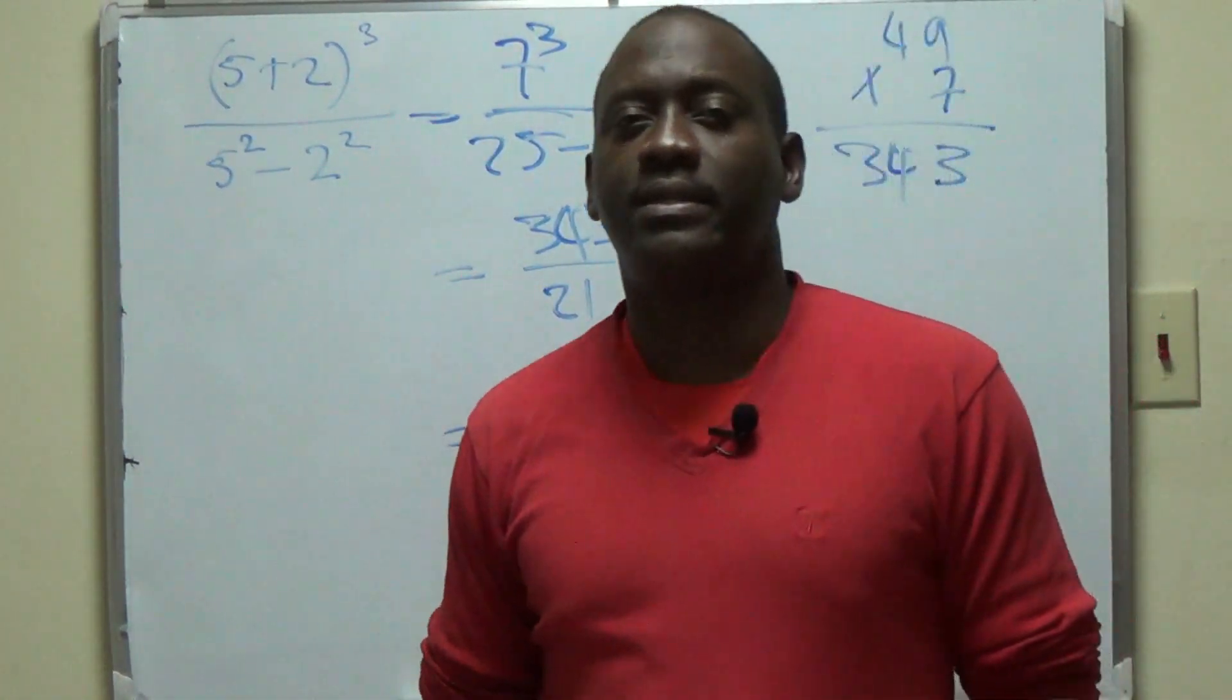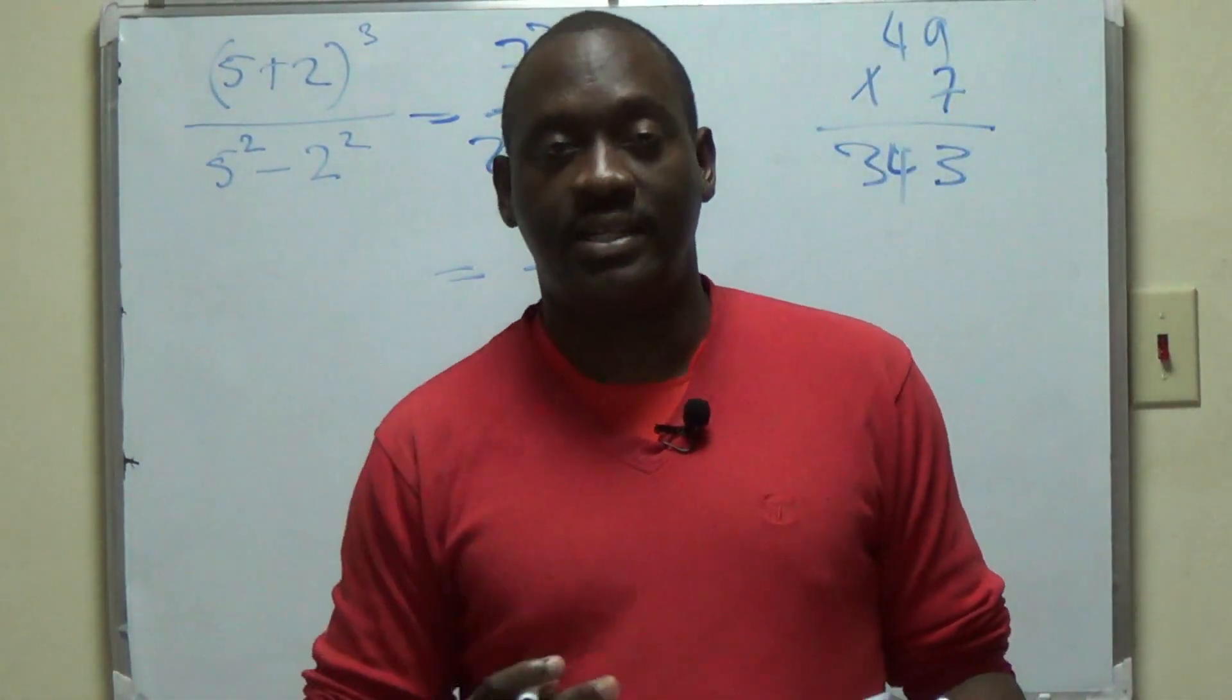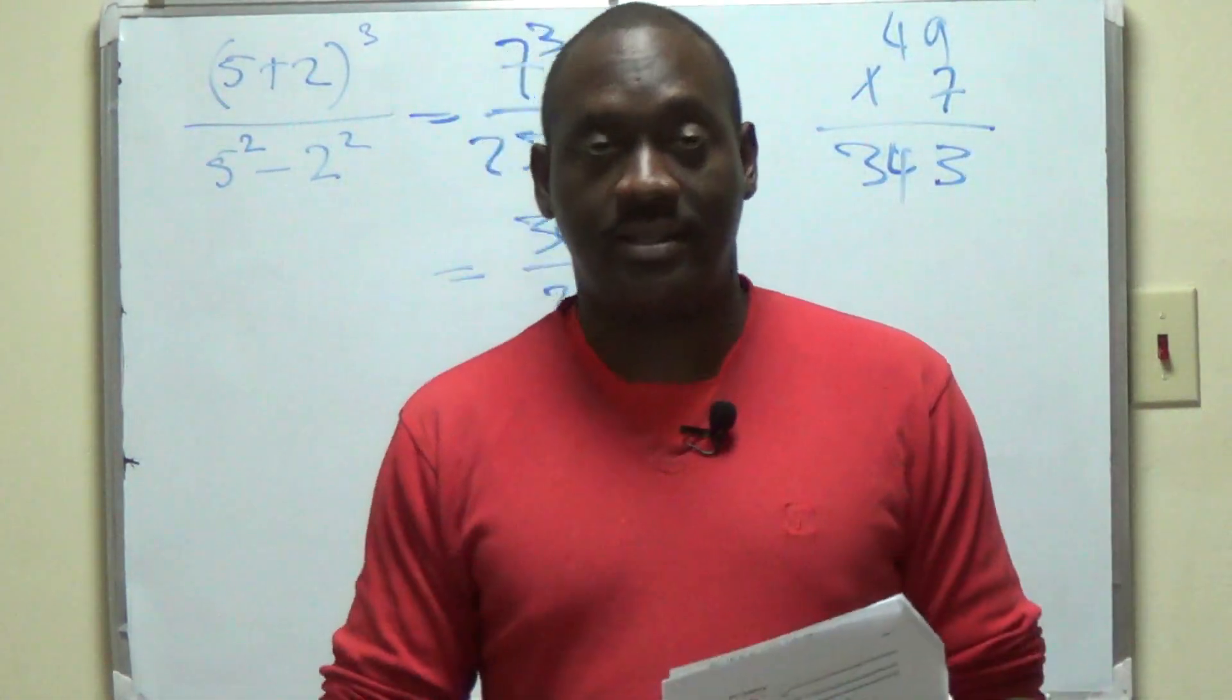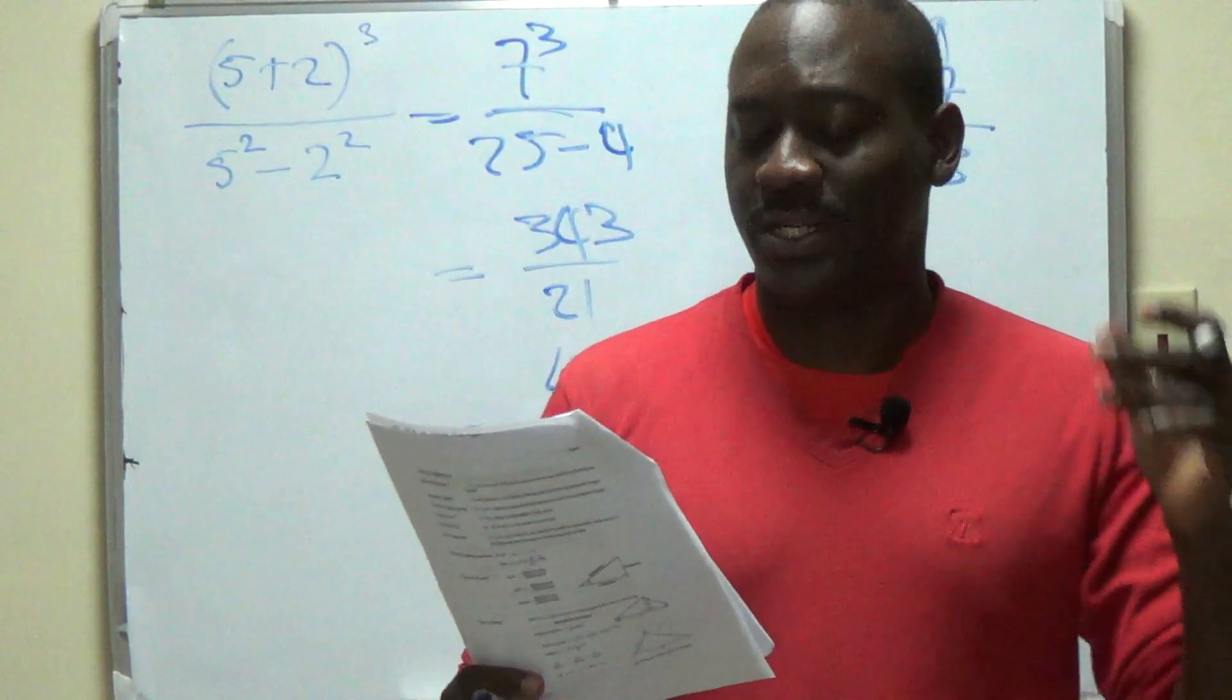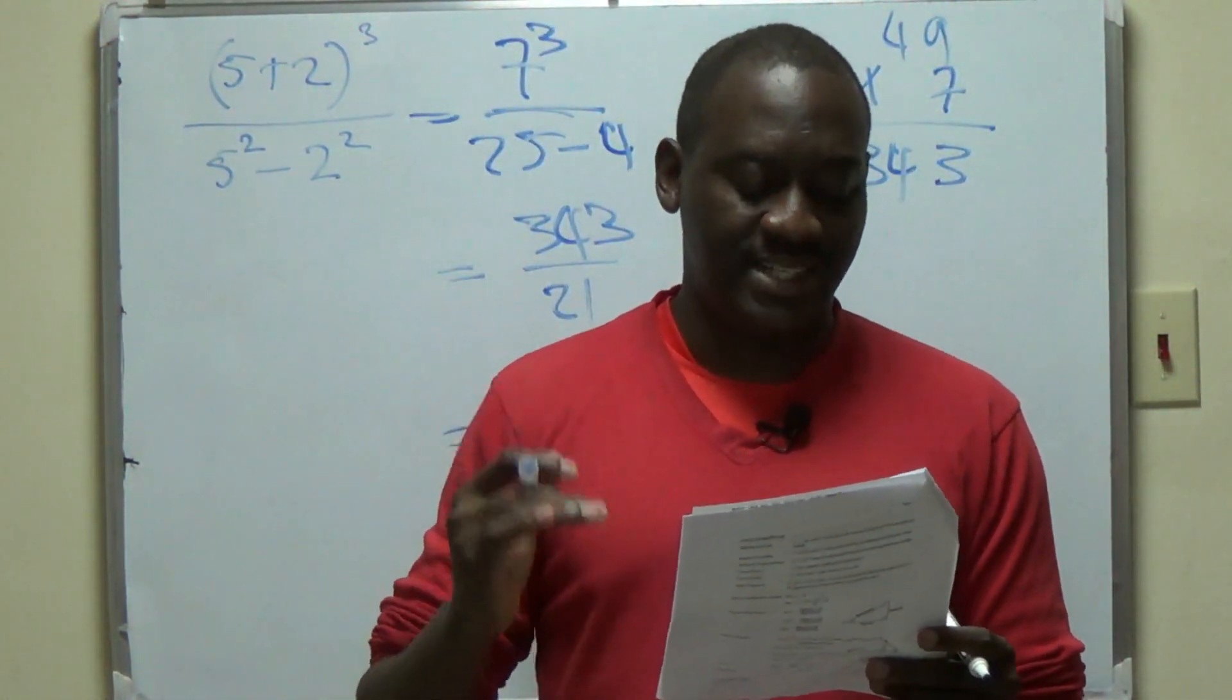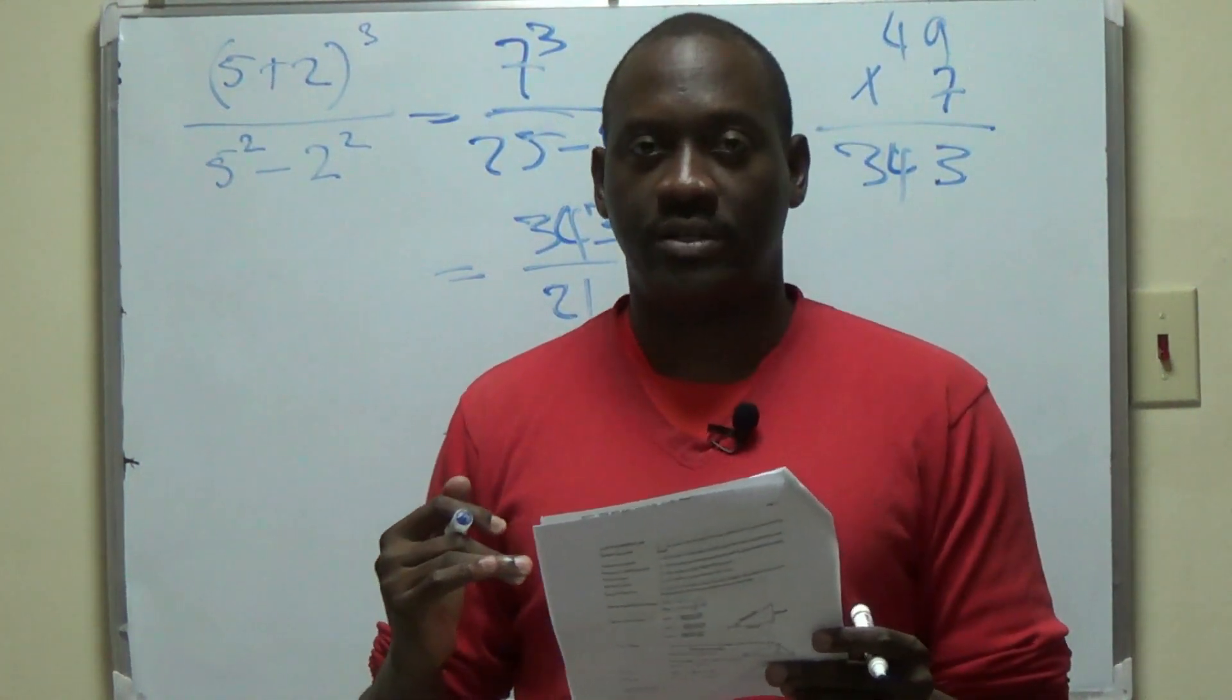In the paper 2, you'd have the calculator. In the paper 1, you wouldn't have the calculator. The objective, of course, is to get the thing done and get it done properly. So that in this case, the answer that we will be looking for is D, 49 over 3.